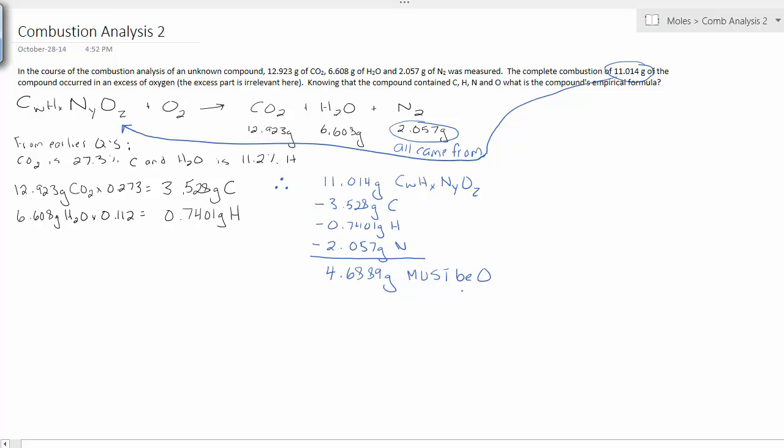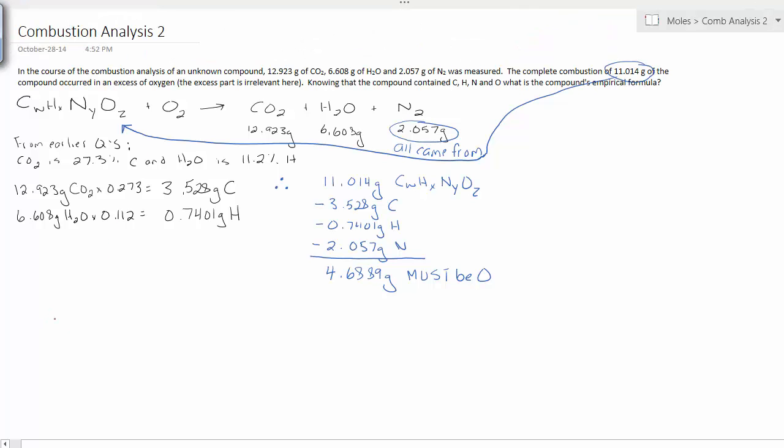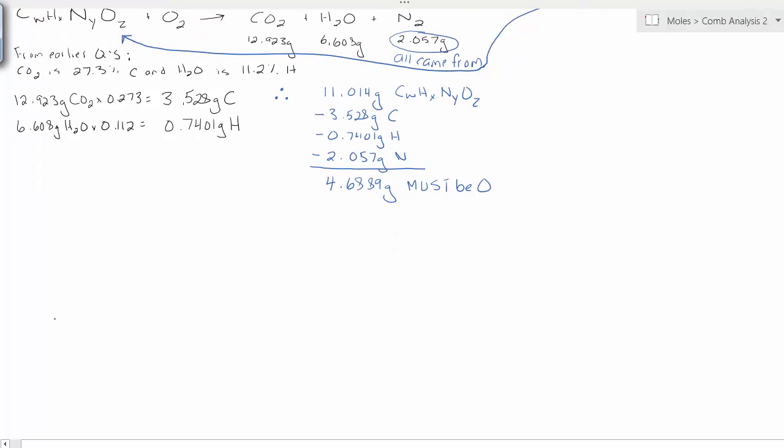Now I know how much carbon, hydrogen, nitrogen, and oxygen were in the original 11-gram sample. I'm going to give myself a little bit more space to work here. Now it's an empirical formula question. Carbon, hydrogen, nitrogen, and oxygen. Mass to moles in each one of them.